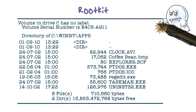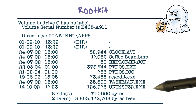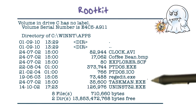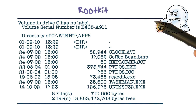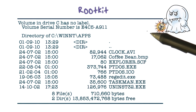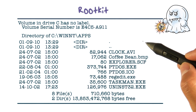So when the rootkit is embedded in the operating system, it can filter out the malware file. When a user looks at the files in a directory, he will not be able to see the malware. This is how a rootkit in the OS can hide a malware from the user. The rootkit accomplishes this by modifying the operating system — in particular, by intercepting function calls to the operating system and filtering the results of those function calls.